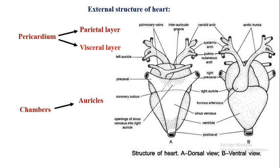The heart has three chambers: two auricles and one large ventricle. So the frog heart is three-chambered. The auricles are dark colored and the ventricle is pink colored. The two auricles are externally demarked by a faint longitudinal groove called the inter-auricular groove, which allows us to clearly distinguish the two auricles from each other.